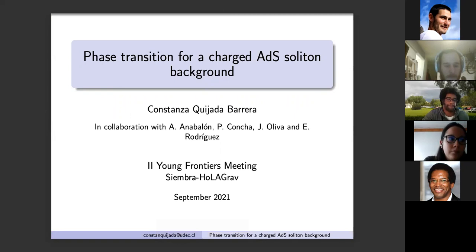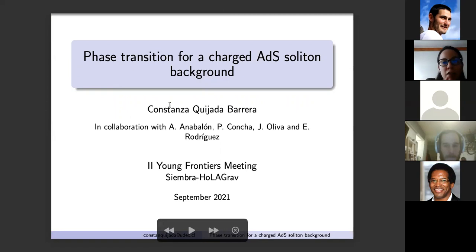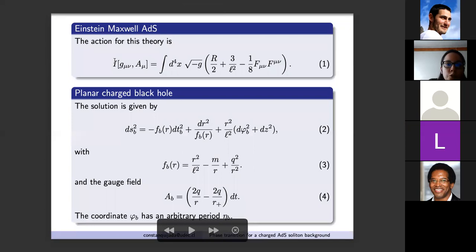She will talk about phase transition for a charged AdS soliton background. Go ahead Constanza. Thank you. My name is Constanza Quijada and I would like to thank the organizers for this opportunity. This work is in collaboration with Andrés Anabalón, Patrick Concha, Julio Oliva, and Evelyn Rodriguez. We study the phase transition between two solutions to the Einstein-Maxwell theory with negative cosmological constant in four dimensions. The action for this theory is given by expression one where R is the Ricci scalar and F is the Maxwell electromagnetic tensor.